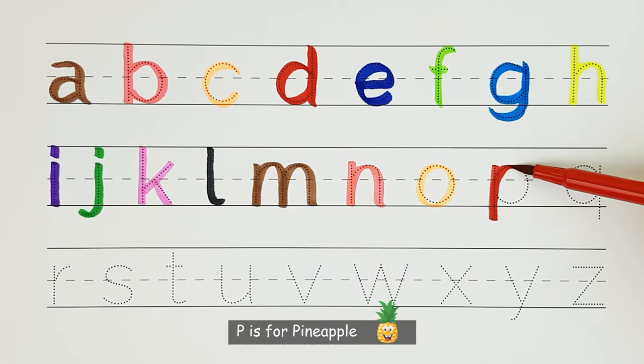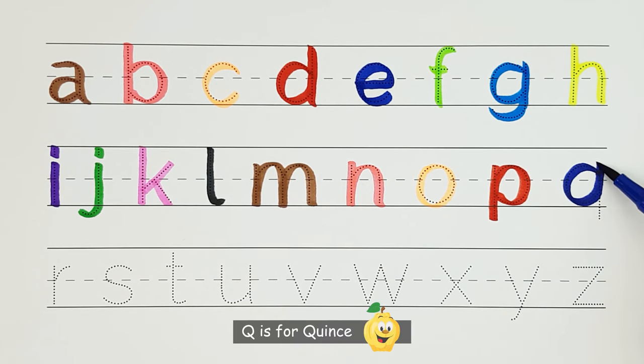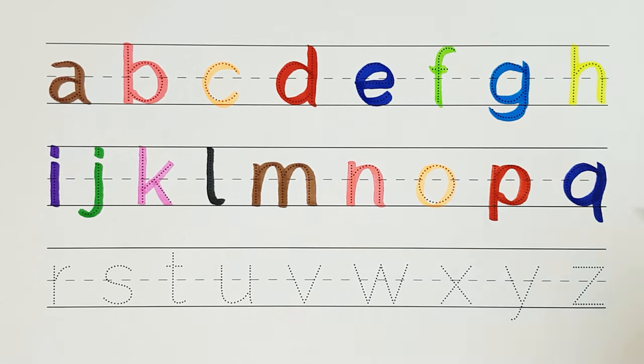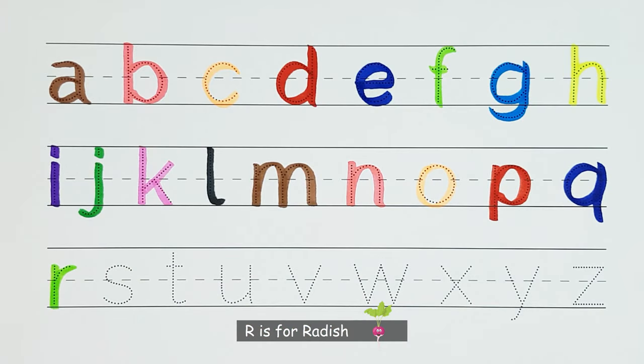P. P is for pineapple. P. Q. Q is for quince. Q. R. R is for radish. R.